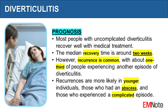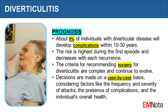Prognosis. Most people with uncomplicated diverticulitis recover well with medical treatment. The median recovery time is around two weeks. However, recurrence is common, with about one-third of people experiencing another episode. Recurrences are more likely in younger individuals, those who had an abscess, and those who experienced a complicated episode. About 5% of individuals with diverticular disease will develop complications within 10 to 30 years. The risk is highest during the first episode and decreases with each recurrence.